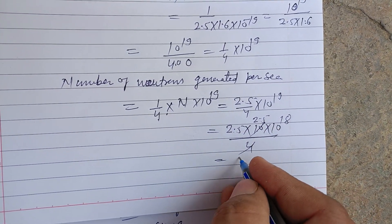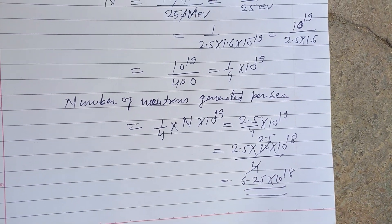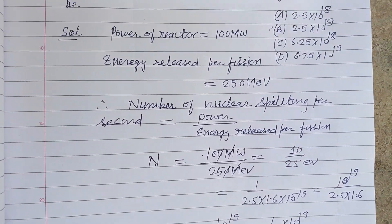So 2.5 into 2.5, this is 6.25 times 10 to the power 18. So 6.25 times 10 to the power 18 is the correct answer,